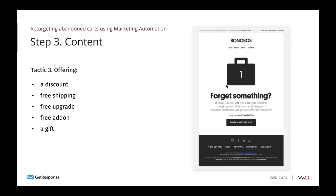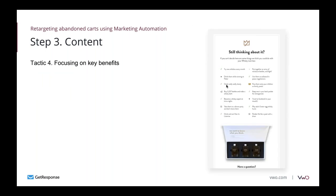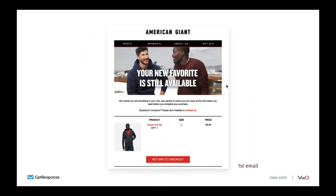An example from Bonobos simply offers a 20% discount on the first order. Here's another tactic: focusing on key benefits. Instead of focusing on a discount, you show the product they were checking out has plenty of positive benefits that should convince them to go back. If someone was genuinely interested in a product, that list of benefits will help them make a good decision.